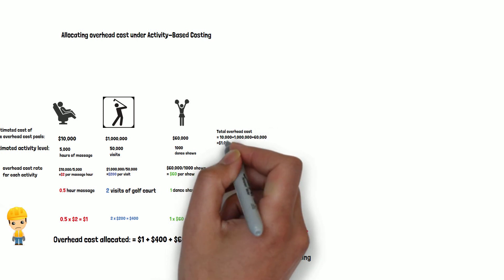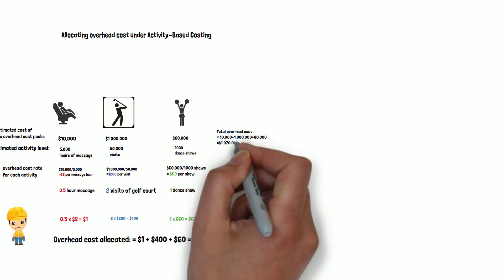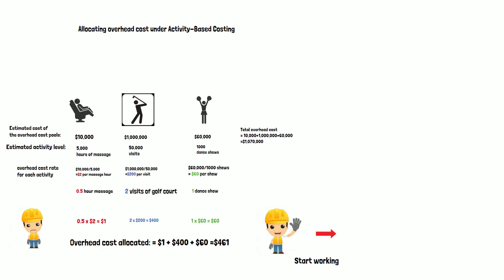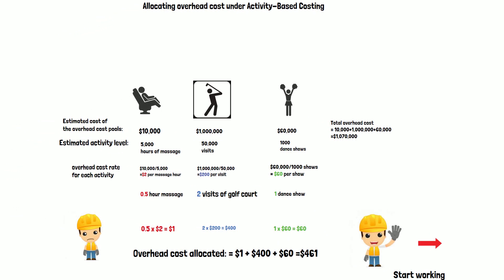Note that the total overhead cost is $1,070,000 when you add $10,000 and $1,000,000 and $60,000. So the total overhead cost is $1,070,000.